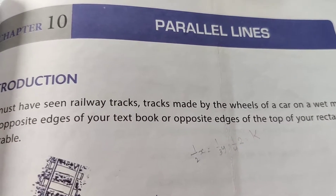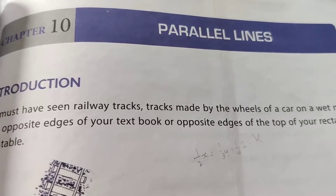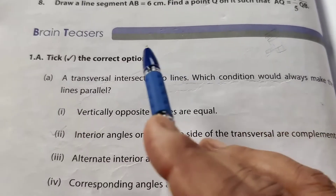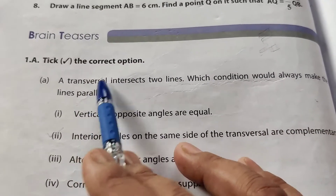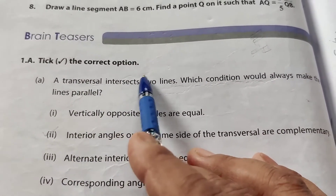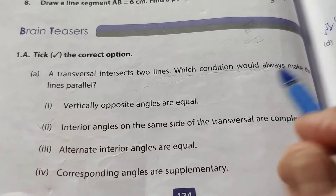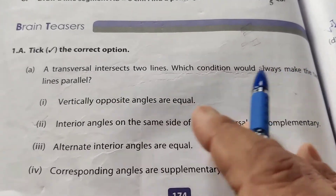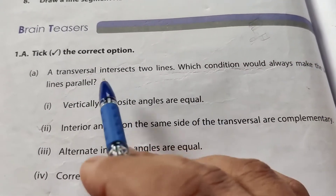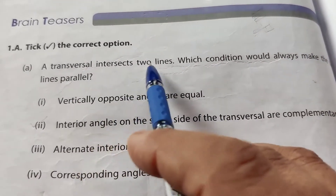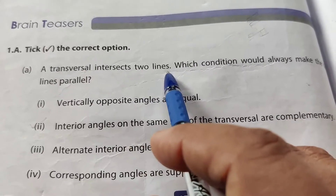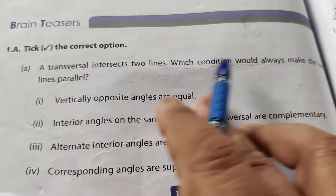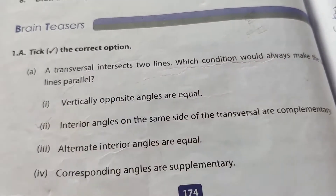Now the Brain Teacher section of this chapter. Take the correct option — multiple choice questions. If a transversal intersects two lines, which condition would always make the two lines parallel?